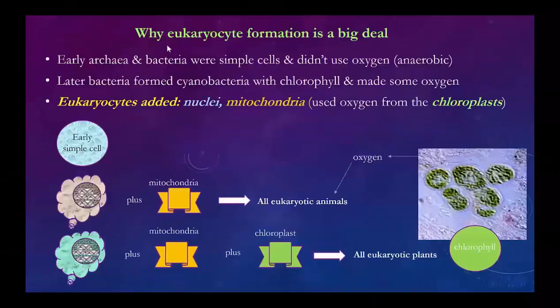Why is eukaryocyte formation such a big deal? Why are the DNA, mitochondria, and chloroplasts called major creative events? Because the development of these structures represents an enormous leap of complexity that cannot be explained by random processes.